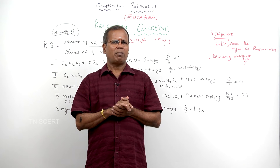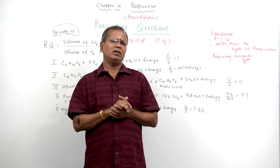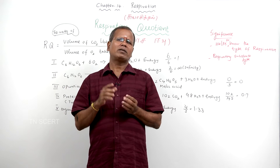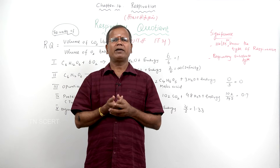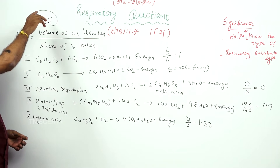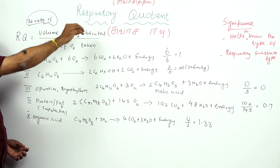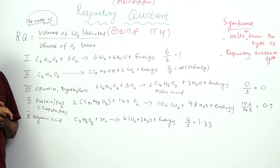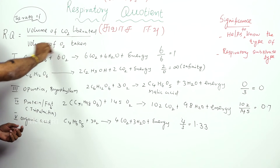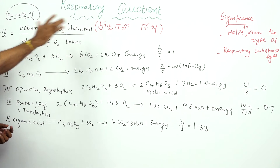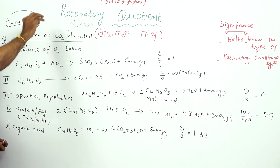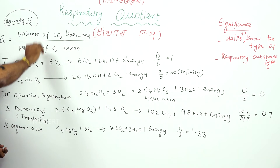During respiration, plants as well as animals take oxygen for the oxidation of food materials and release carbon dioxide. The respiratory quotient is nothing but the ratio of the volume of carbon dioxide liberated to the volume of oxygen taken or consumed.